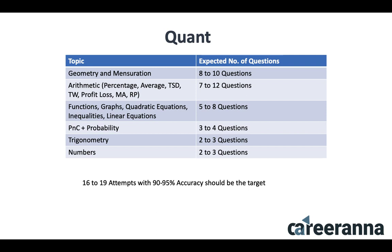Coming to the QUANT part: please understand that while many coachings spend a lot of time on Numbers, it is the least important topic from a CAT perspective. Over last few years, we have not had more than 2 to 3 questions from Numbers. The highest weightage is usually Geometry and Mensuration — 8 to 10 questions — followed by Arithmetic with 7 to 12 questions. Algebra carries 5 to 8 questions, covering functions, graphs, quadratic equations, inequalities, and linear equations. PnC and Probability get 3 to 4 questions, and Trigonometry 2 to 3 questions.